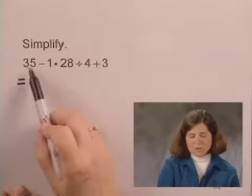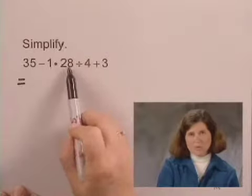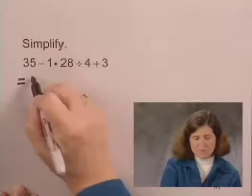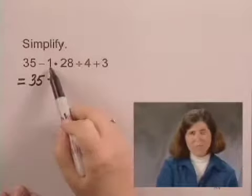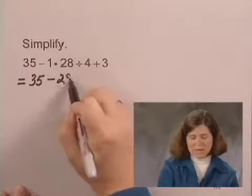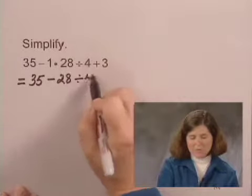The first multiplication or division that I see is 1 times 28, working from left to right. So I write 35 minus, I perform the multiplication, 1 times 28 is 28, and I write the rest of the expression.